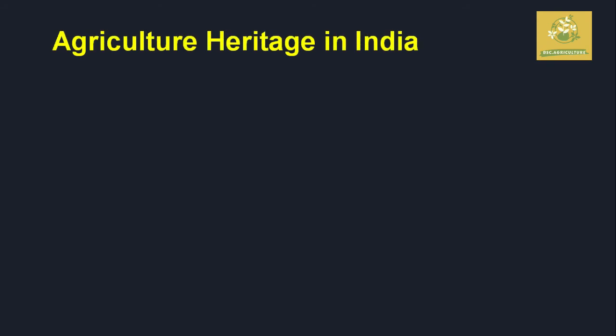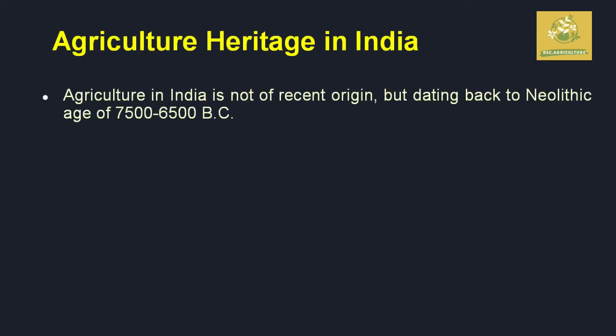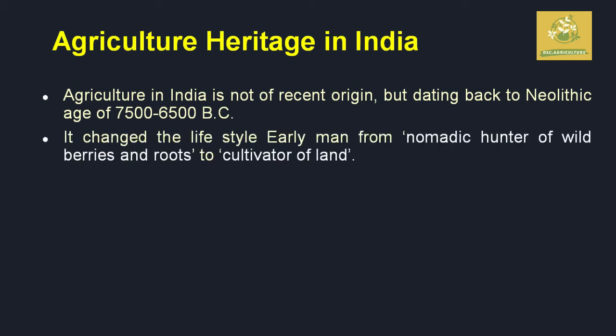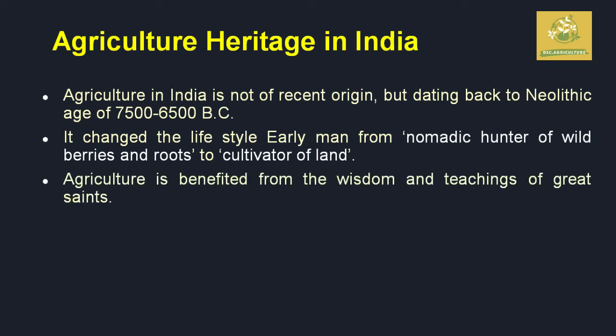Agricultural heritage mostly comes from the Neolithic period, around 7,500 to 6,500 BC. Agriculture is not an area of origin unique to India, but it changed the lifestyle of early man from nomadic hunter-gatherers to cultivators of land.